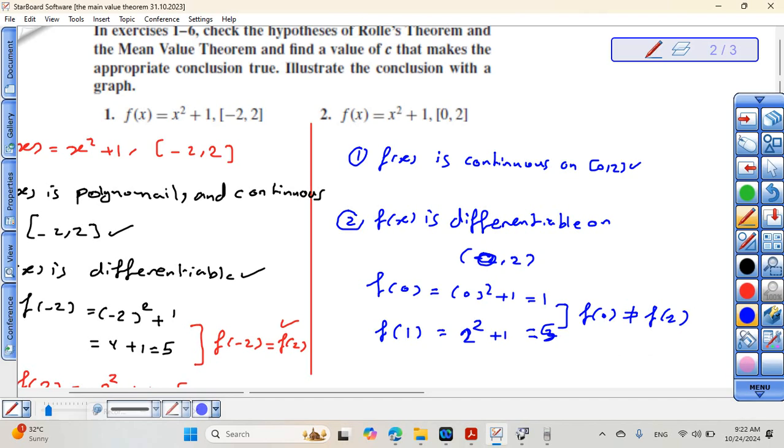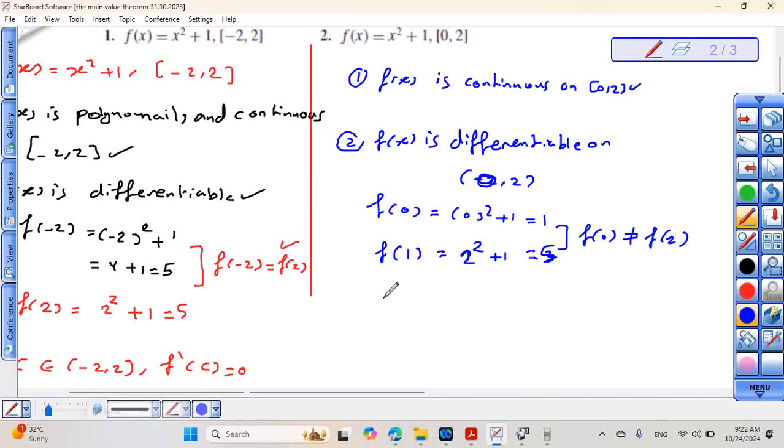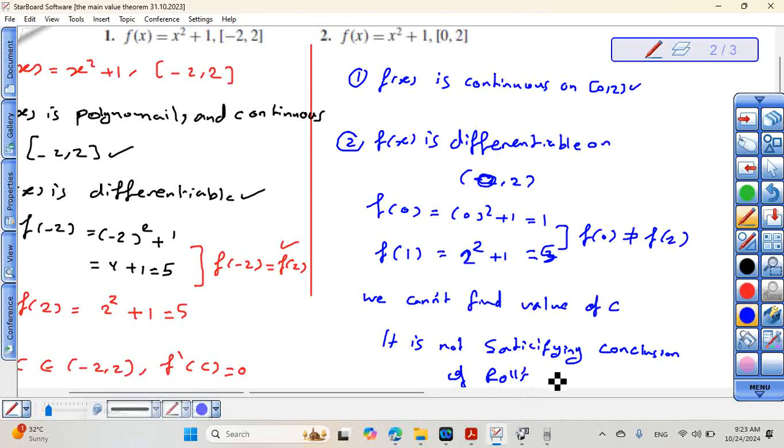This condition is not satisfied. We cannot find a value of C. Maybe we can use the Mean Value Theorem to continue, but for Rolle's, we can write here it is not satisfying the conclusion of Rolle's Theorem.